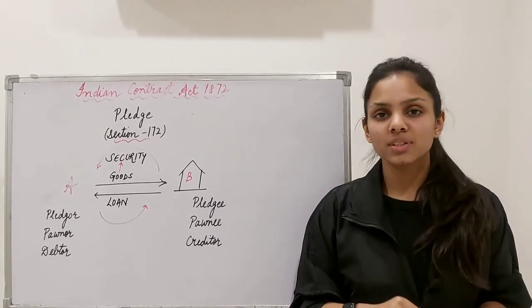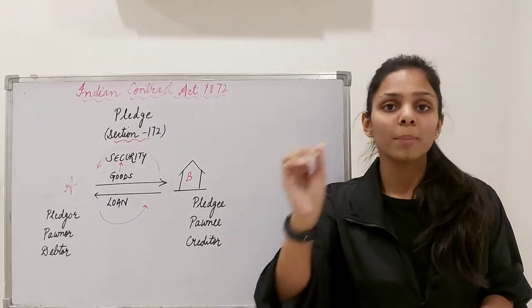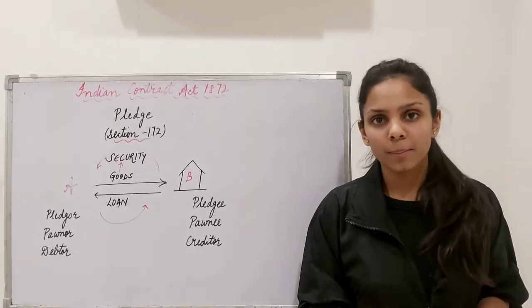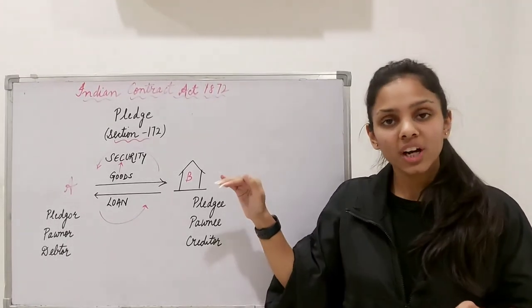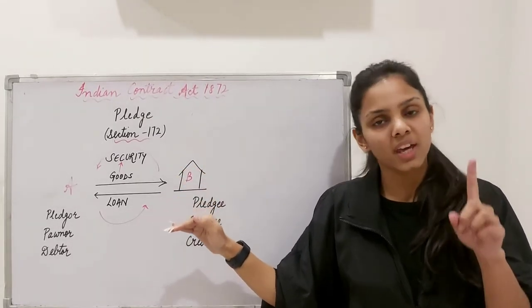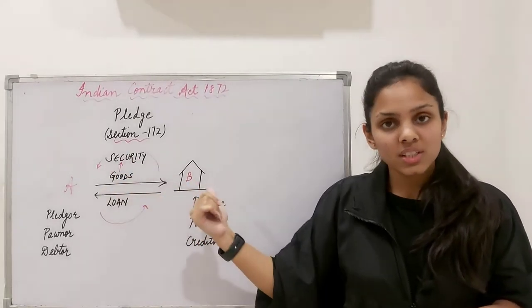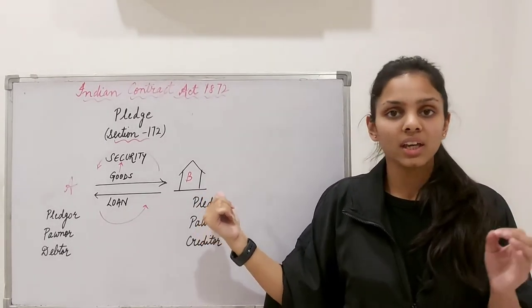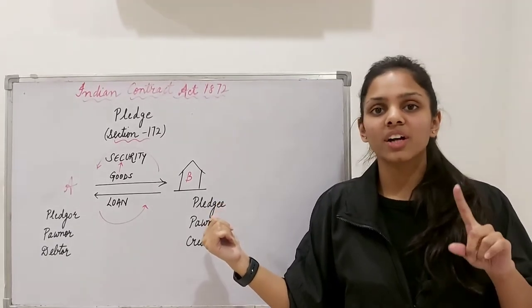The thin line differentiation between the two concepts is this: in Contract of Bailment, when you bail your goods, it is for some specific purpose, which could be any specific purpose — be it repairing or dry cleaning. But in Contract of Pledge, the movable goods that you pledge have only one specific purpose — those goods act as a security. The person to whom you pledge your goods has no other right; he cannot use those goods, unlike in Contract of Bailment.